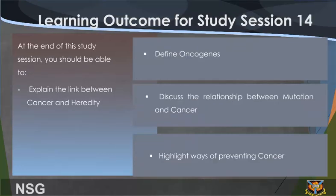Learning outcomes: At the end of this study session, you should be able to explain the link between cancer and heredity, define oncogenes, discuss the relationship between mutation and cancer, and highlight ways of preventing cancer.